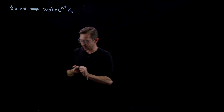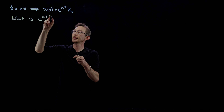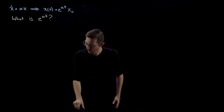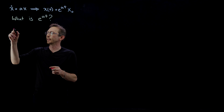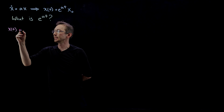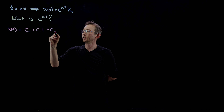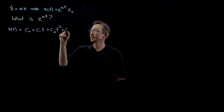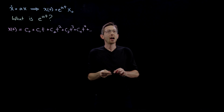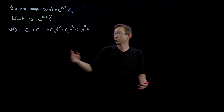We're going to ask ourselves: what is e^(at)? We're going to derive it from scratch using a power series or Taylor series expansion. We assume that we can expand x(t) in terms of powers of t: x(t) = c_0 + c_1*t + c_2*t² + c_3*t³ + c_4*t⁴ + ⋯. We assume this expansion goes on forever — it's essentially an infinite polynomial Taylor series expansion of the solution x(t).